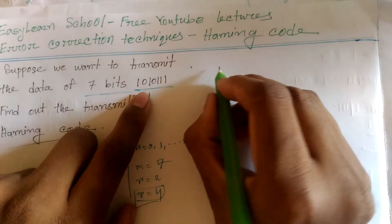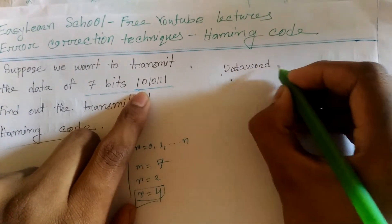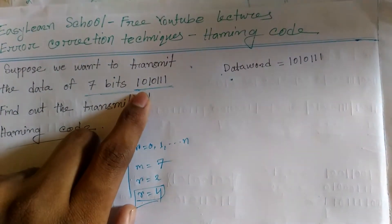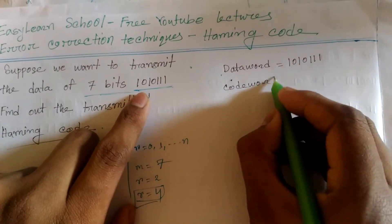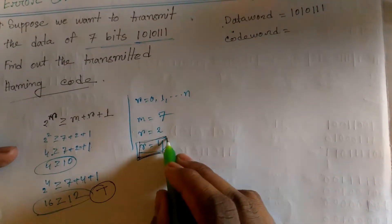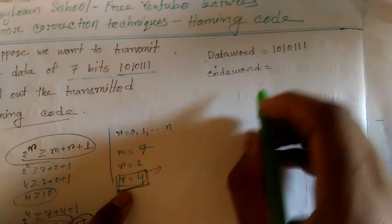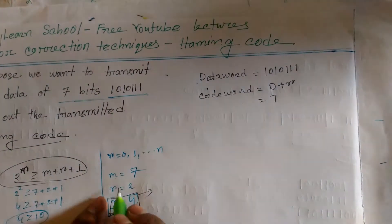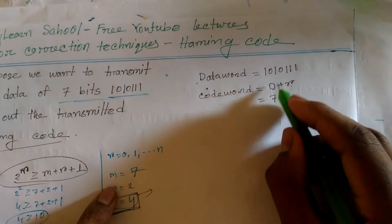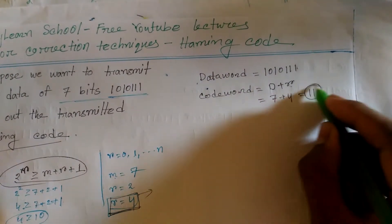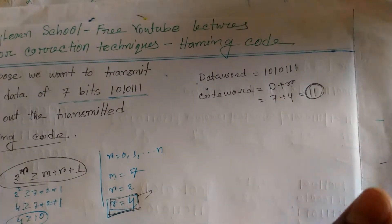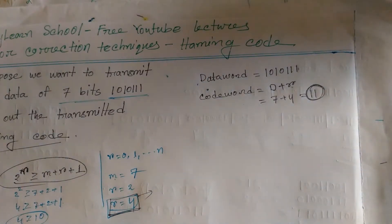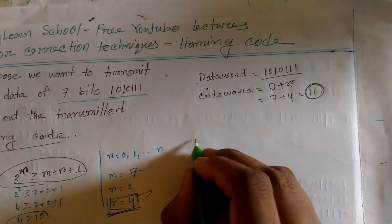So the value of r redundant bits means we have a code word. We can use r to add redundant bits. I will write m equals 7 plus r equals 4. Data word is 7 bits. Total value is 11. Code word is 11 bits.